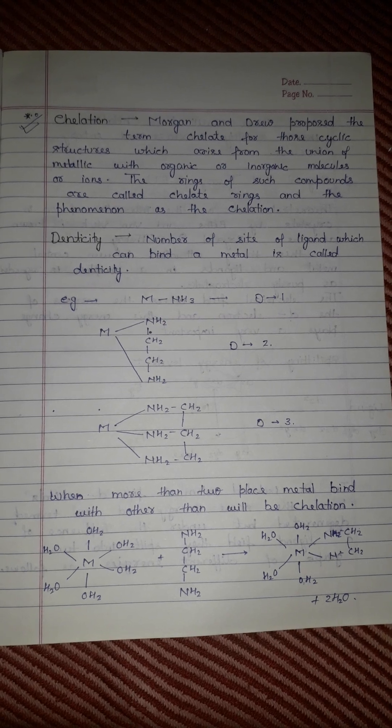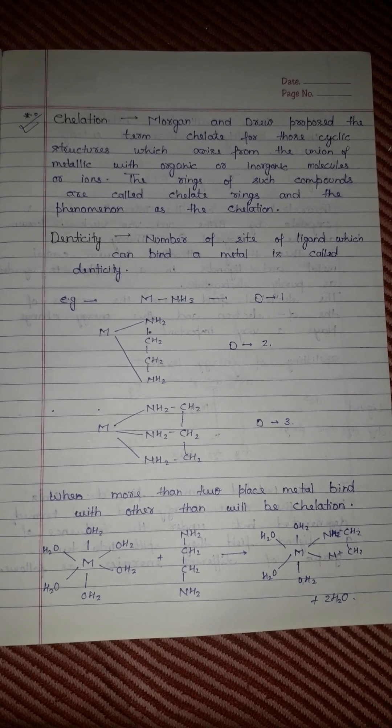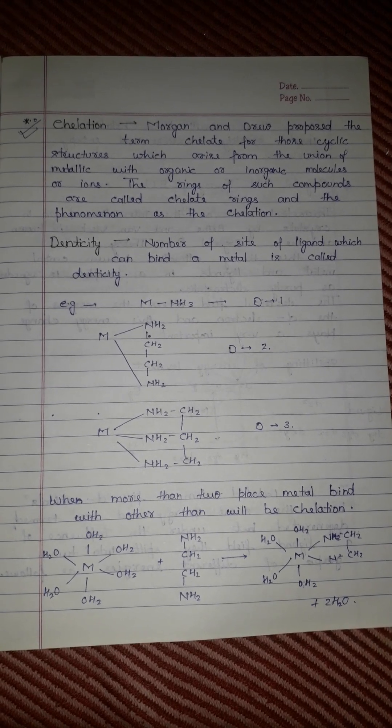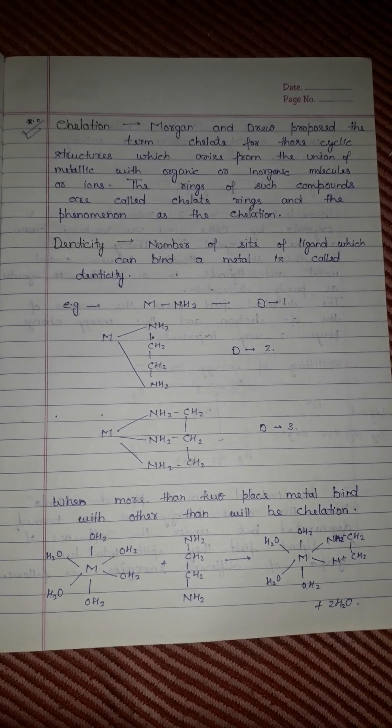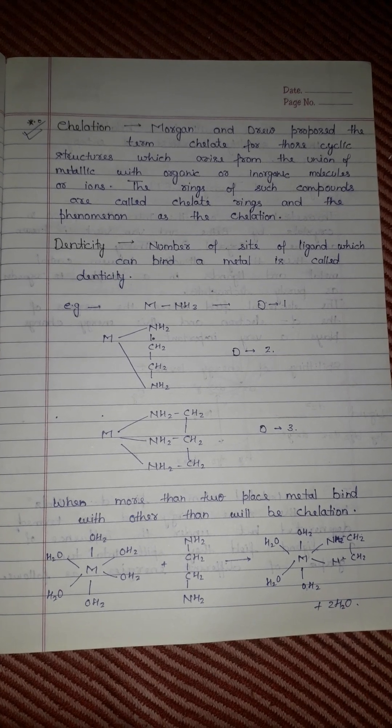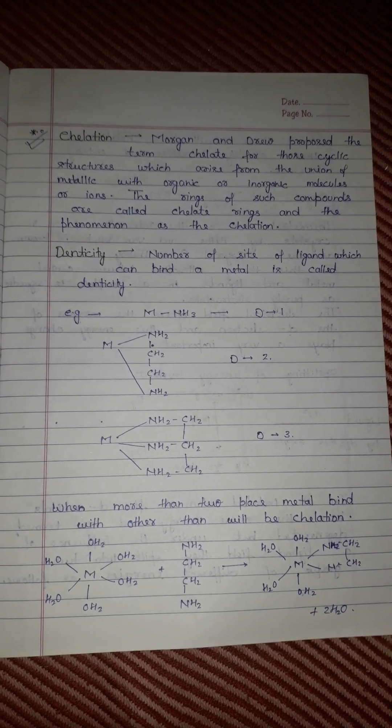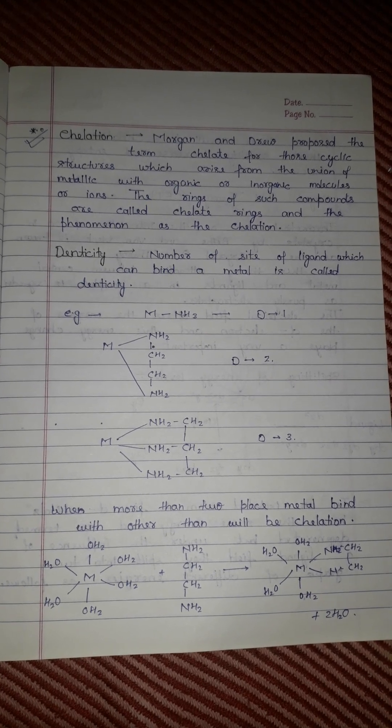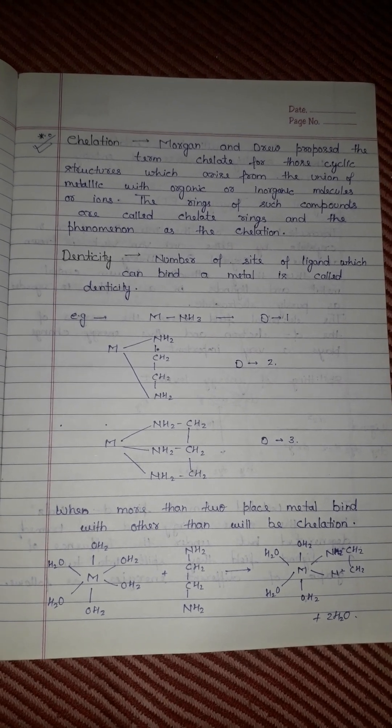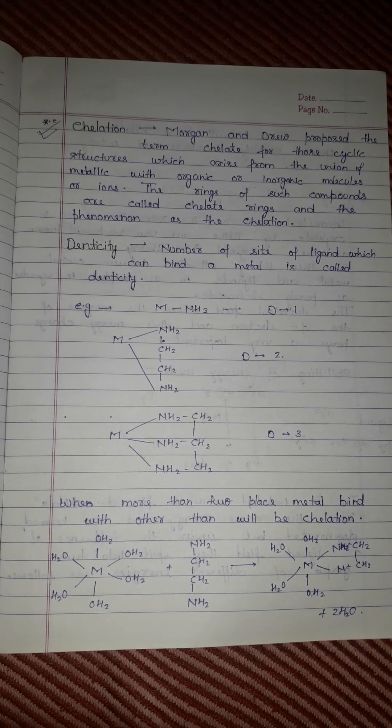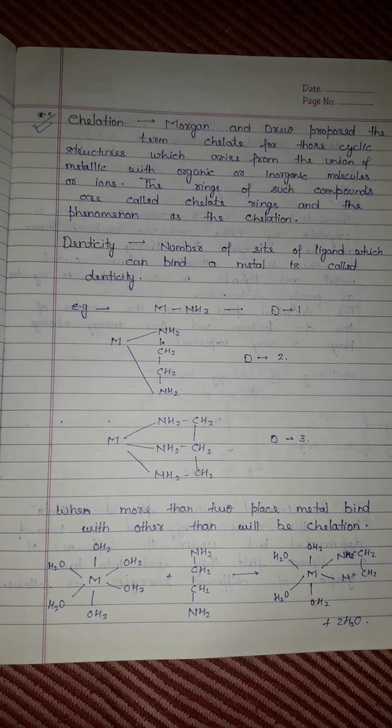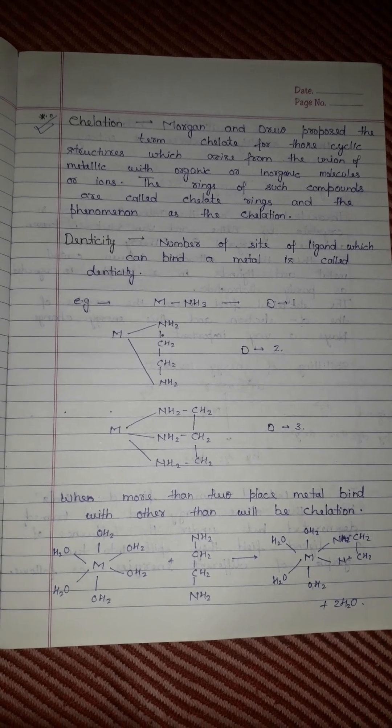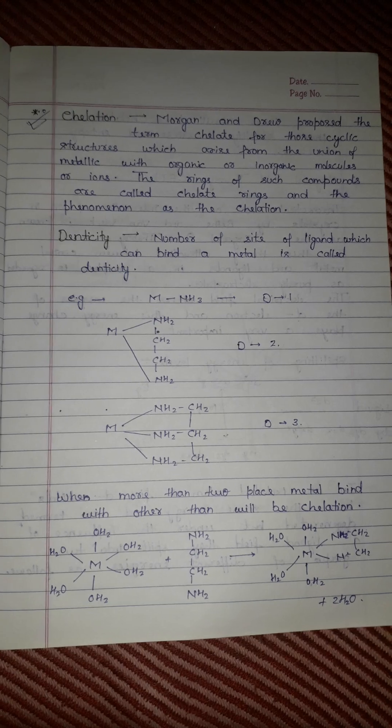The rings of such compounds are called chelate rings, and the phenomenon is chelation. Denticity is the number of sites of a ligand which can bind a metal. When more than two sites bind the metal, chelation occurs, meaning the metal is connected to the ligand at multiple points.